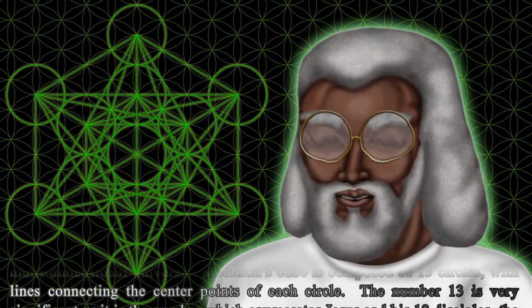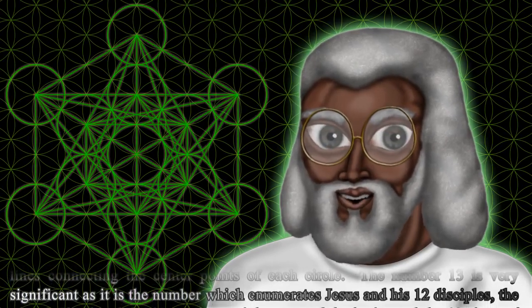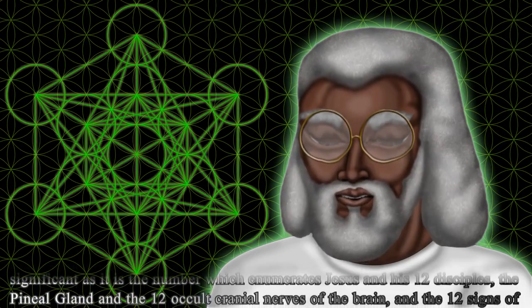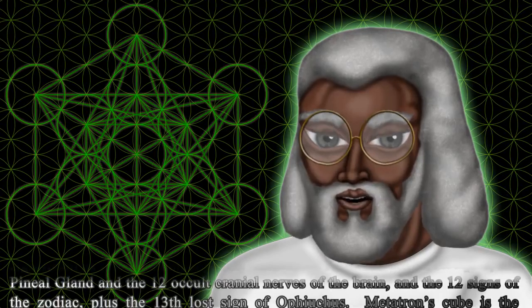The number 13 is very significant as it is the number which enumerates Jesus and his 12 disciples, the pineal gland and the 12 occult cranial nerves of the brain, and the 12 signs of the zodiac plus the 13th lost sign of Ophiuchus.